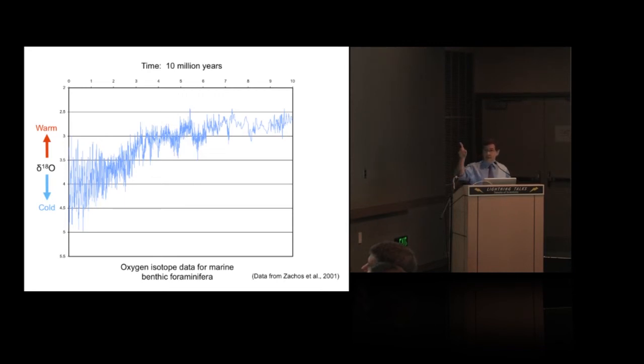You can see the overall trend toward a cooler planet as you get closer to the present. But what really interested me were the fluctuations. After 6 million years ago, which happens to correspond with the period of human evolution, you see a really dramatic increase in the amount of fluctuation.